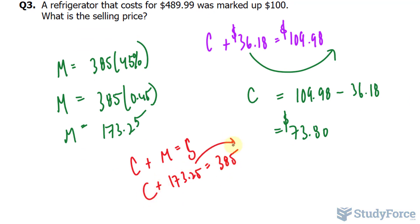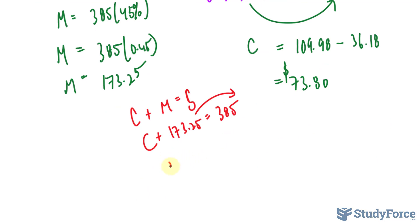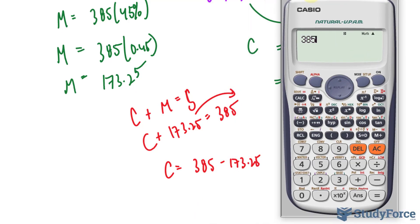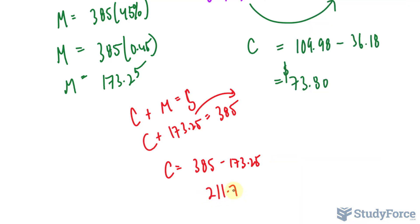And we rearrange. We bring that over. Just like before, C is equal to $385 minus $173.25. We end up with $211.75. So they bought it from the factory for $211.75, and they marked it up by $173.25.